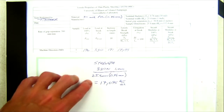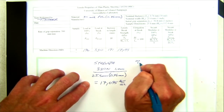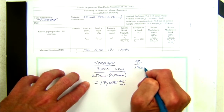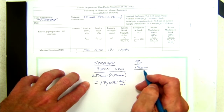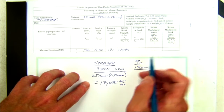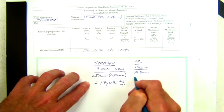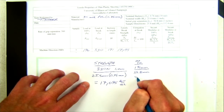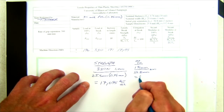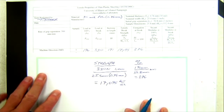The next calculation is elongation at break, which is the change in length over the initial length. The change in length is 191 millimeters divided by L₀, which is 50 millimeters or 2 inches — the grip separation. That calculation times 100 gives a percent elongation at break of 376%, which is entered under elongation at break.